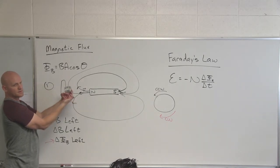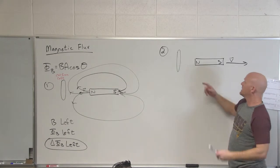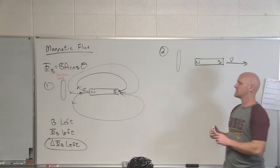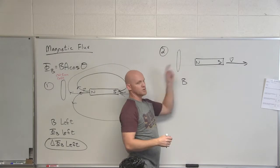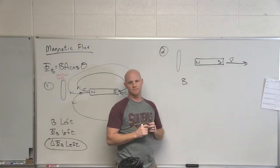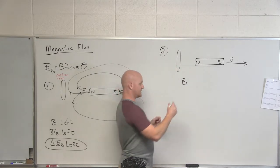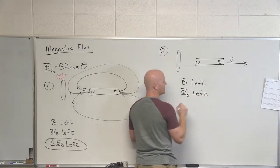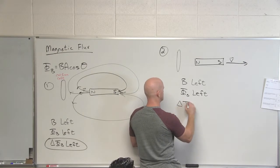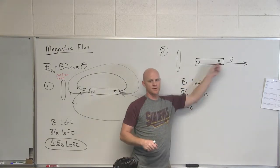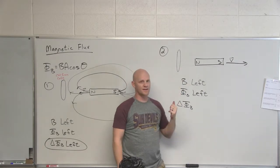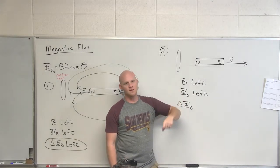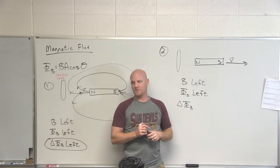Now we've got a different situation: same loop, same bar magnet, but now we're pulling the bar magnet away from the loop. At the location of the loop, what direction does the magnetic field point? Still left. And because the magnetic field points left, the magnetic flux points left as well. As I move this bar magnet away, is the strength of the magnetic field and magnetic flux increasing or decreasing? Decreasing. So the flux points left, but it's decreasing, which means the change in flux must point the opposite direction — to the right.